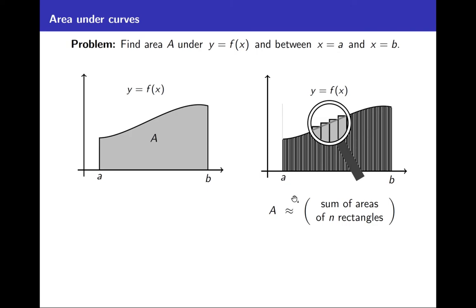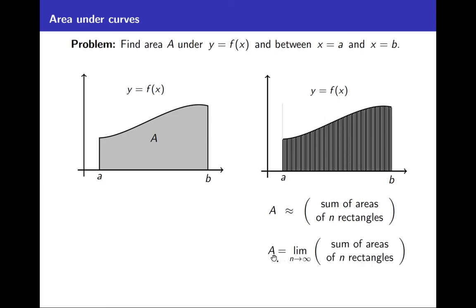The more rectangles you add, the closer and closer the sum of their areas is to the ideal area A. So we say that the area A is the limit as n goes to infinity of the sum of the areas of n rectangles. This is exactly the approach we're going to take today — expressing the area as a limit as n approaches infinity of the sum of areas of n rectangles. This is going to be a very productive point of view.